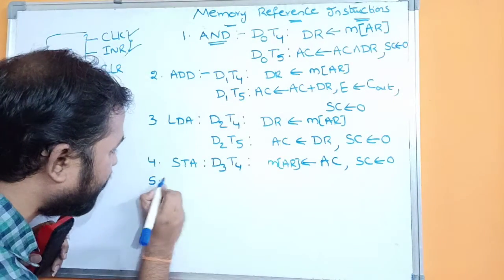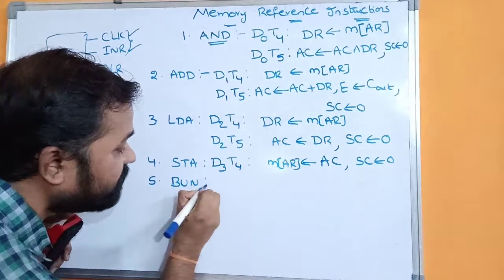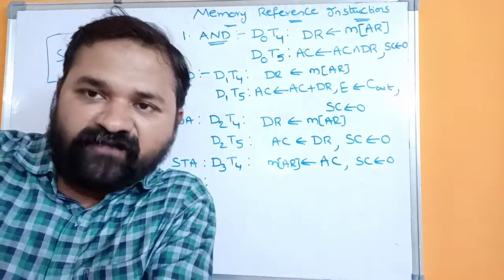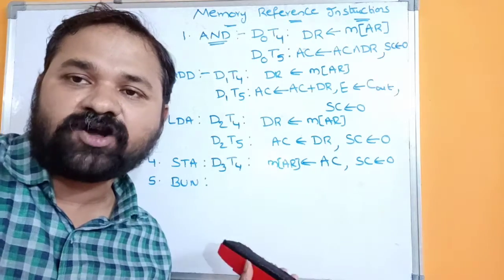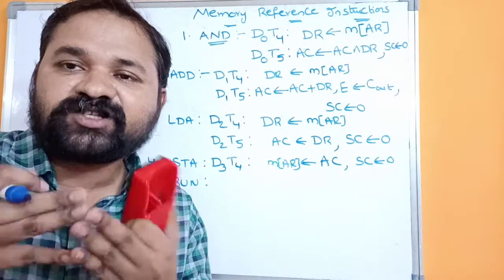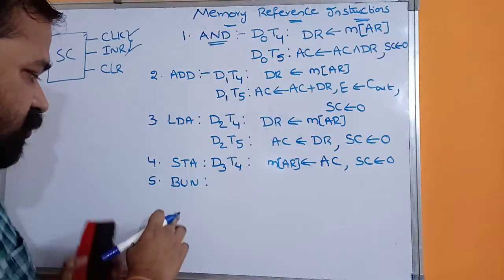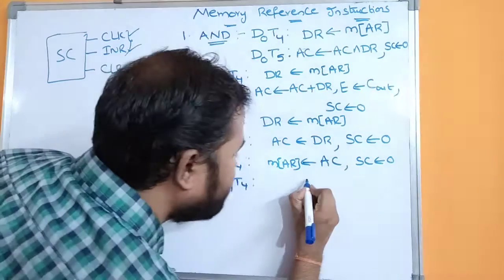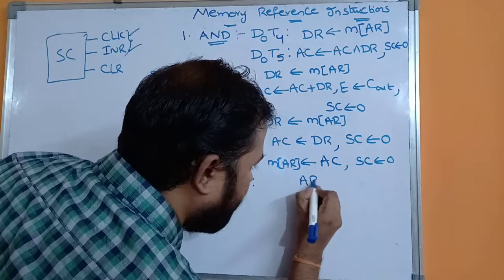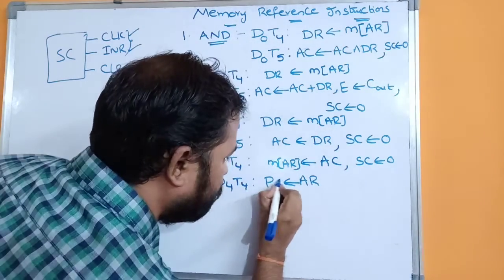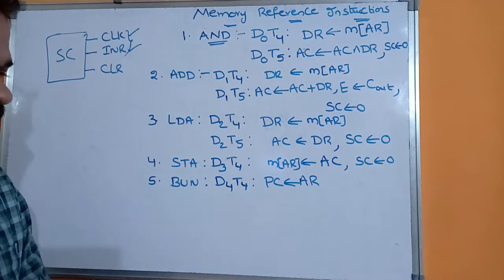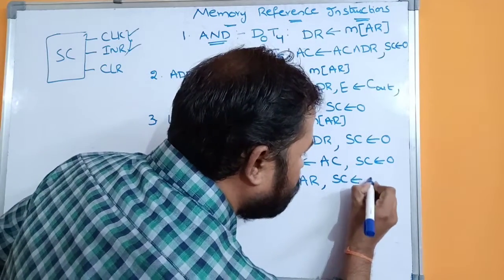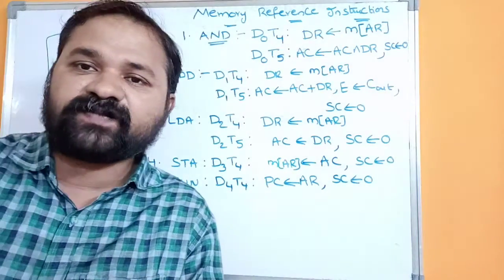The next instruction is BUN. BUN stands for branch unconditionally — jump unconditionally. Without checking any condition, if you go from one statement to another, it is called BUN. This instruction is executed when decoded output D4 is active, and the timing signal is T4. The address register AR is transferred to the program counter, and the sequence counter is cleared to zero so the next timing signal starts from T0 onwards.